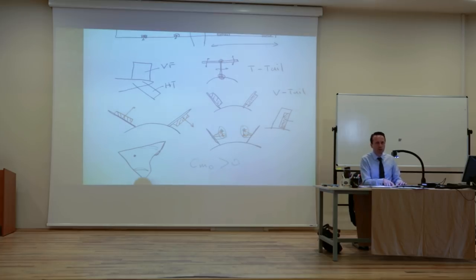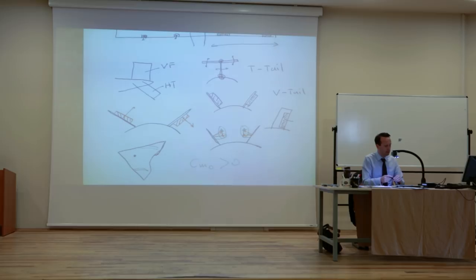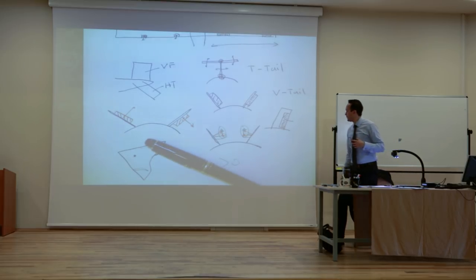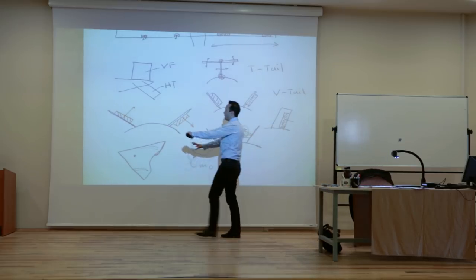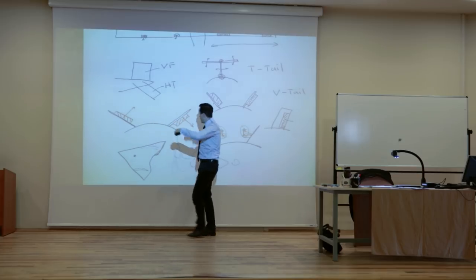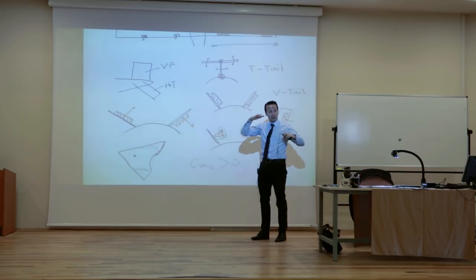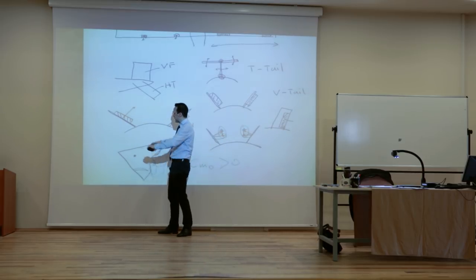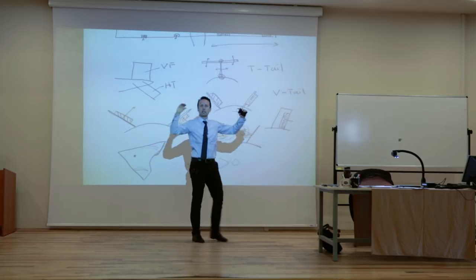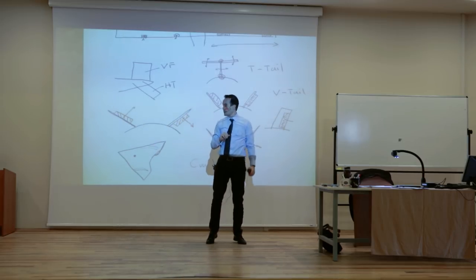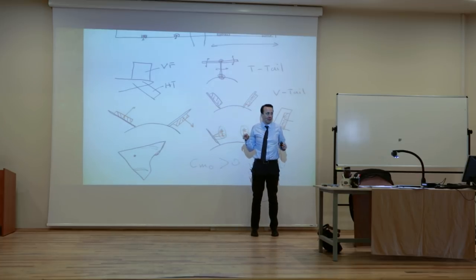In order to get CM0 positive, what they do is they just twist the whole wing. For the delta wing, the whole wing is twisted in such a way that CM0 is still positive - which means you have a positive pitch-up moment when alpha is equal to zero. To get that, you need more angle of attack at the front and less angle of attack here. So the delta wing looks really straight, but it is twisted so that CM0 is still positive for a stable delta wing airplane.